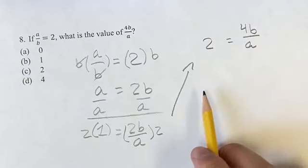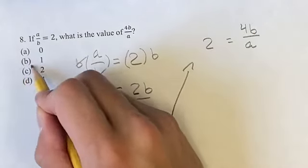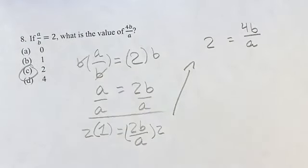So what is the value of 4b over a? Well, it's equal to 2. As always, thank you for liking and subscribing, and I'll see you in the next video.